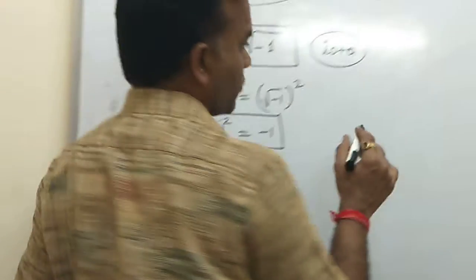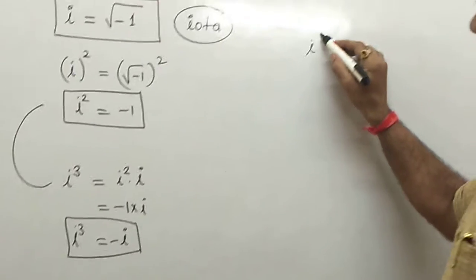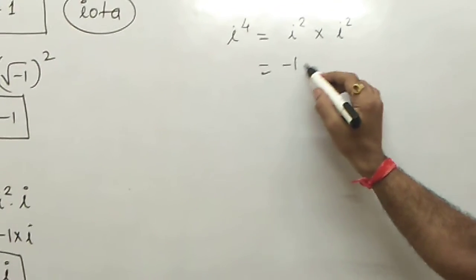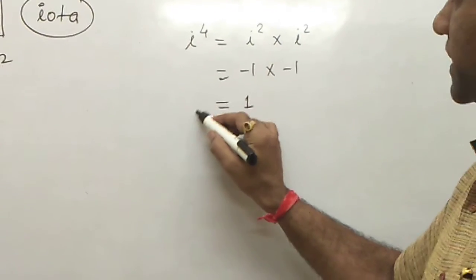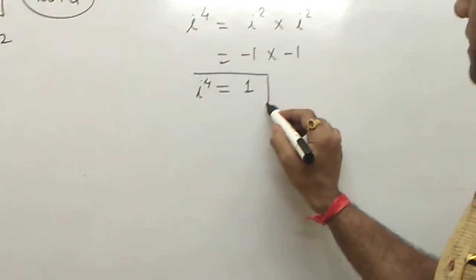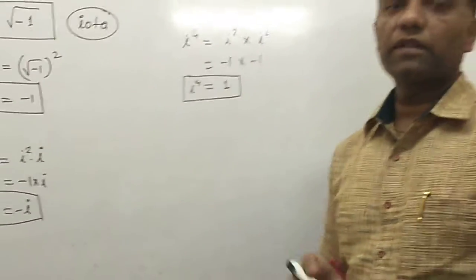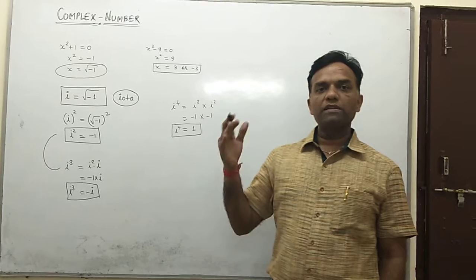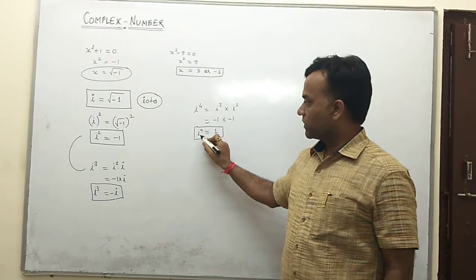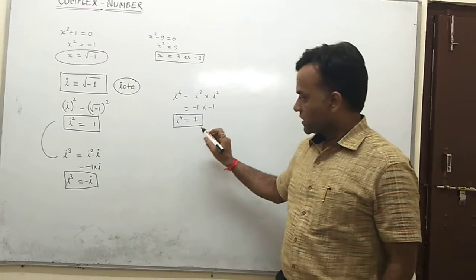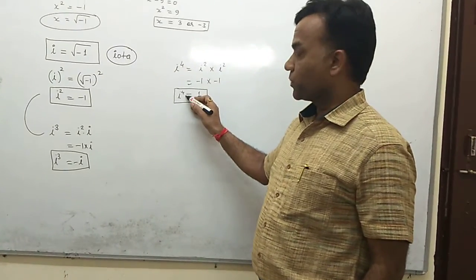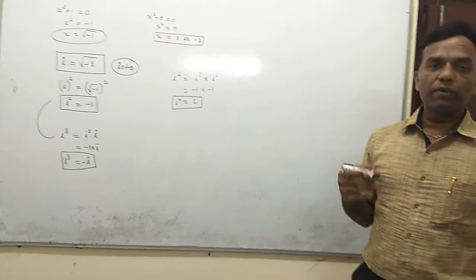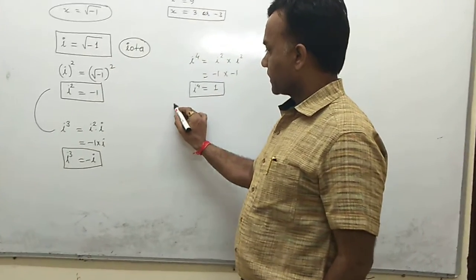Similarly, i⁴ = i² × i² = (−1)(−1) = +1. So i⁴ = 1. Every term of i that is a multiple of 4 — its answer will always be 1. No matter what power is given, if it is a direct multiple of 4, the answer is 1. Here we write down the general formula: i^(4m) = 1.